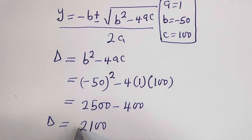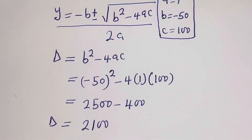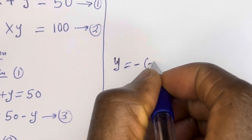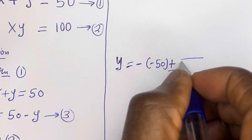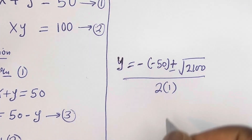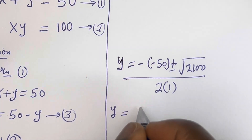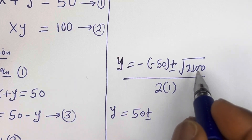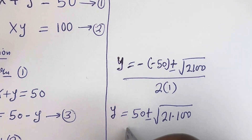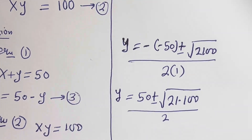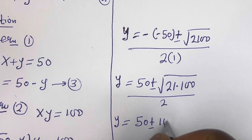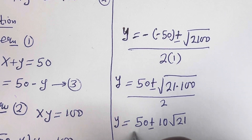Let's substitute this into the formula. We have y is equal to minus(minus 50) plus or minus the square root of 2100, over 2 multiplied by 1. Now, the square root of 2100 can be written as the square root of 100 times 21, which simplifies over 2.